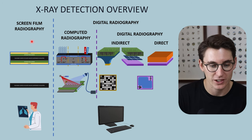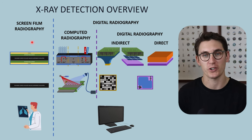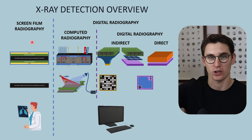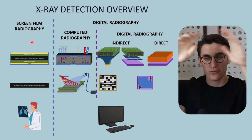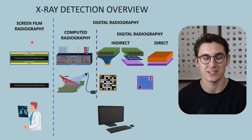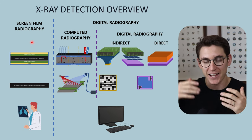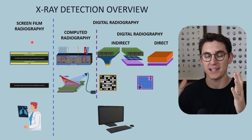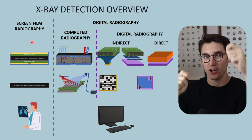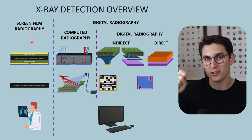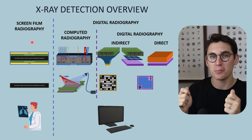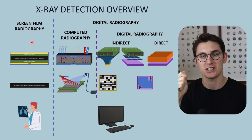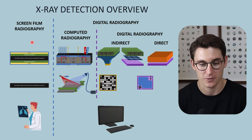When we talk about screen film radiography, we are talking about the actual plastic film that we hold up to a light box. That film has varying different optical densities, allowing different amounts of light through the film and creating the radiographic image that we see. This film cannot be manipulated digitally — it's not on a computer screen, it's a physical copy that we can carry around.